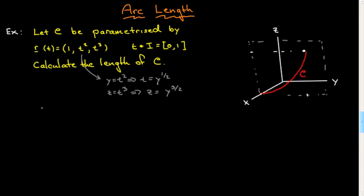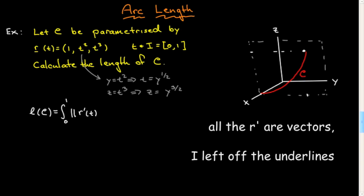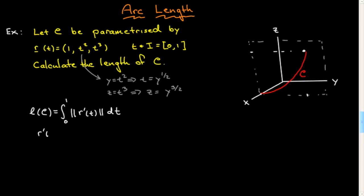All we have to do, really, is plug in the formula. The length of c will be equal to the integral from a to b here, a is zero, and b is one of the modulus of r prime t dt. So we need this modulus of r prime, let's first compute r prime, so differentiating zero, 2t, 3t squared.